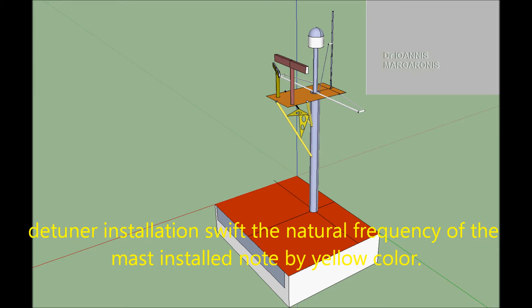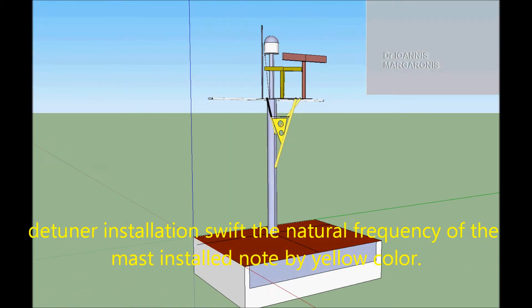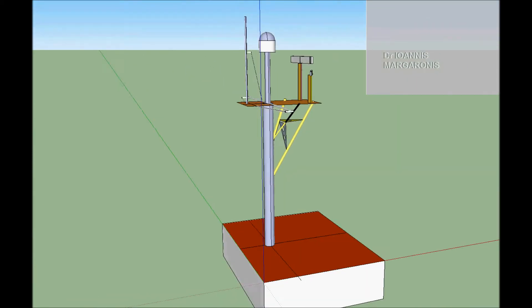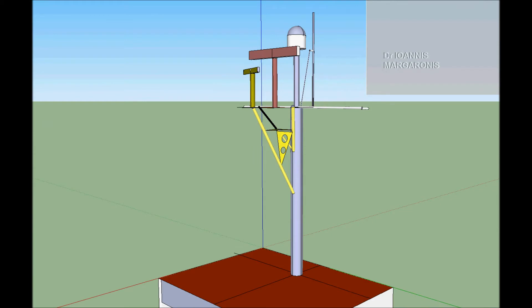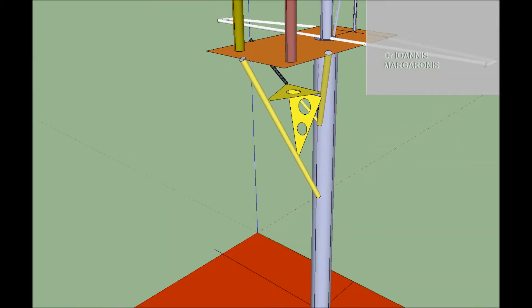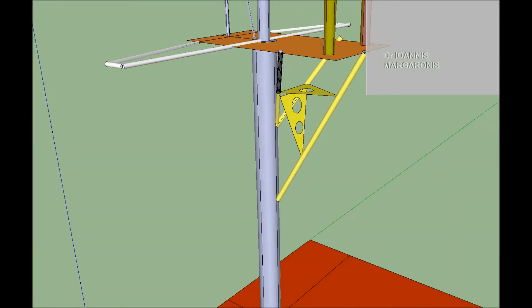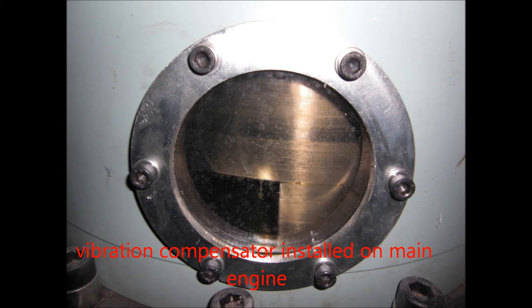Detuner installation shifts the natural frequency of the mast, installed node noted by yellow color.